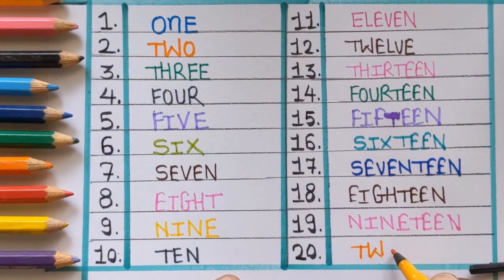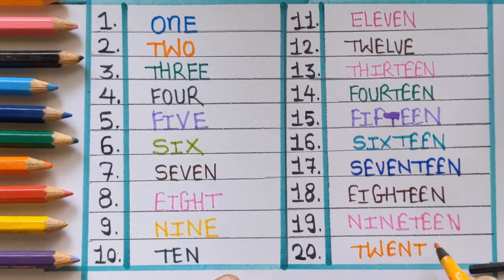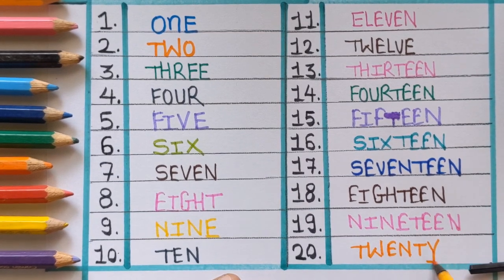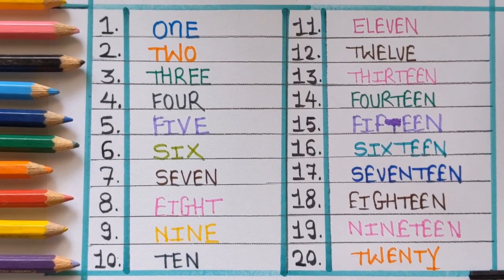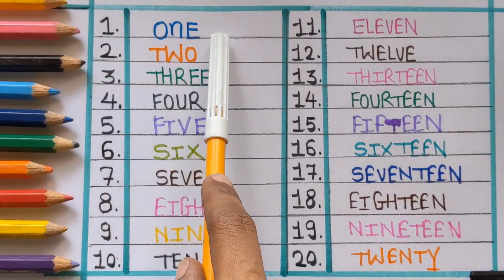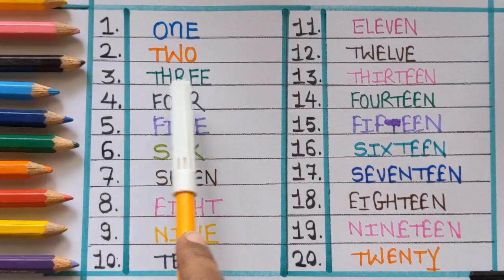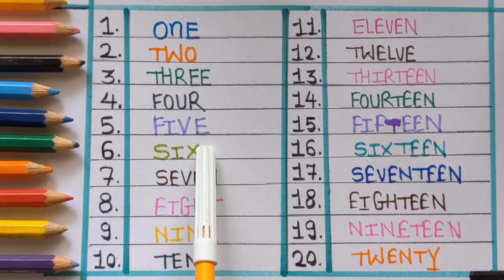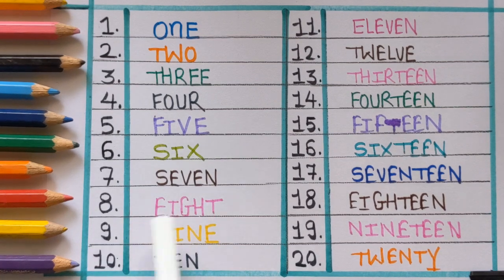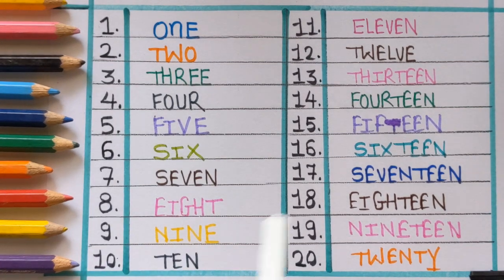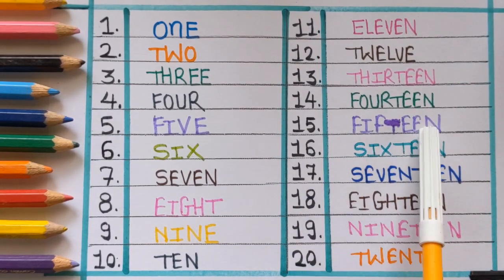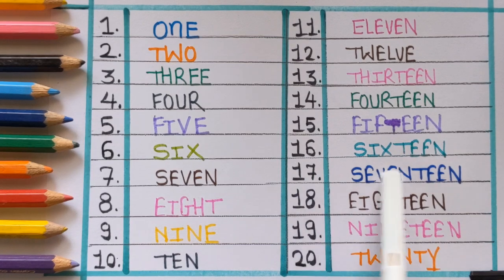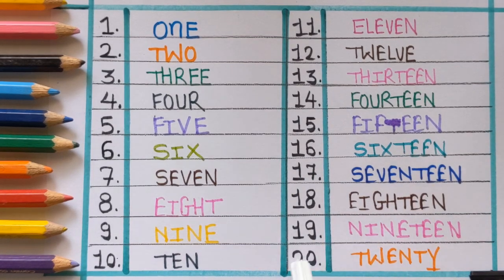Now let's revise with me. One, two, three, four, five, six, seven, eight, nine, ten, eleven, twelve, thirteen, fourteen, fifteen, sixteen, seventeen, eighteen, nineteen, and twenty.